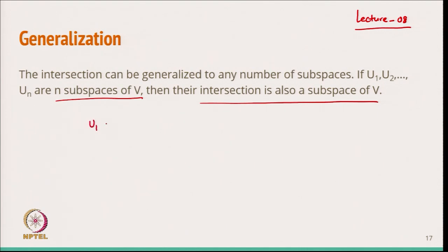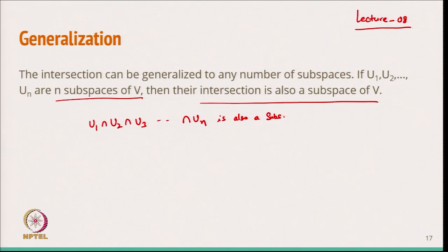So we can write u1 ∩ u2 ∩ u3 ∩ ... ∩ un, the intersection of all n subspaces, is also a subspace of v. The proof is similar: take one element, take two elements, show their vector addition and scalar multiplication belongs to the intersection, the same way we have done before.